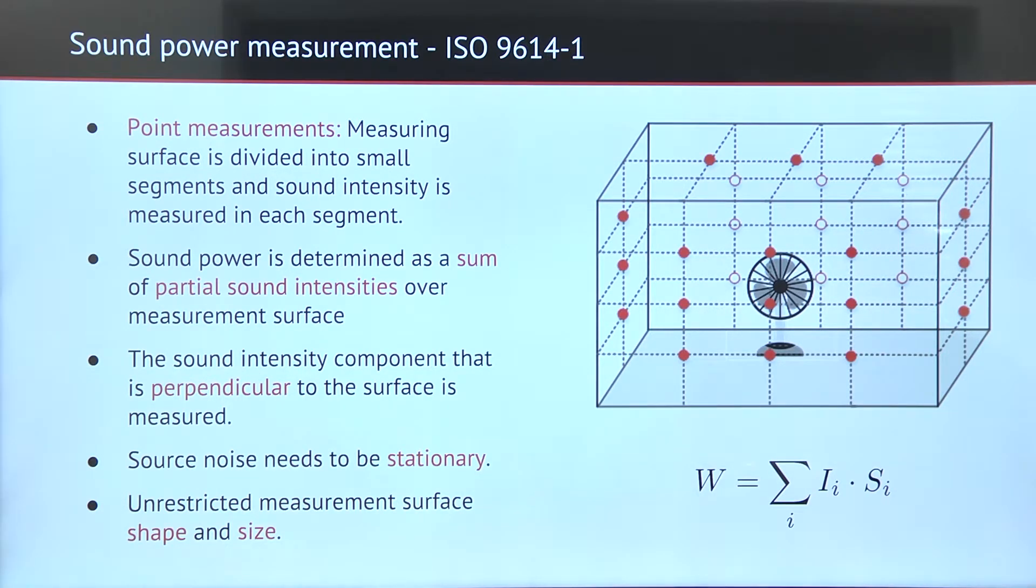The measuring surface is divided into small segments and sound intensity is measured in each segment. The measurement surface is not constrained, but most commonly a simple measurement surface is used, such as a parallelepiped.